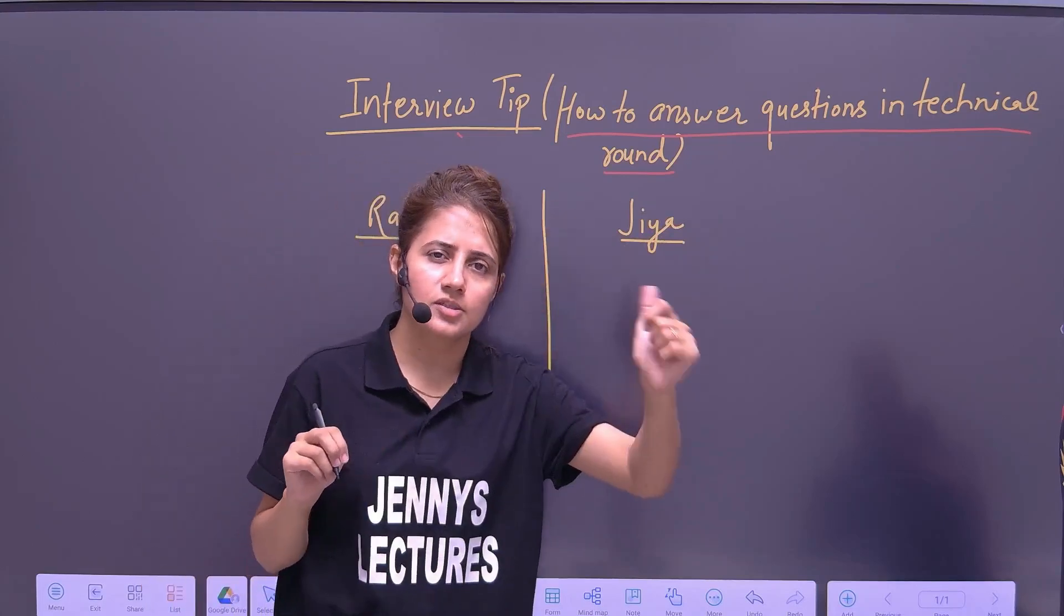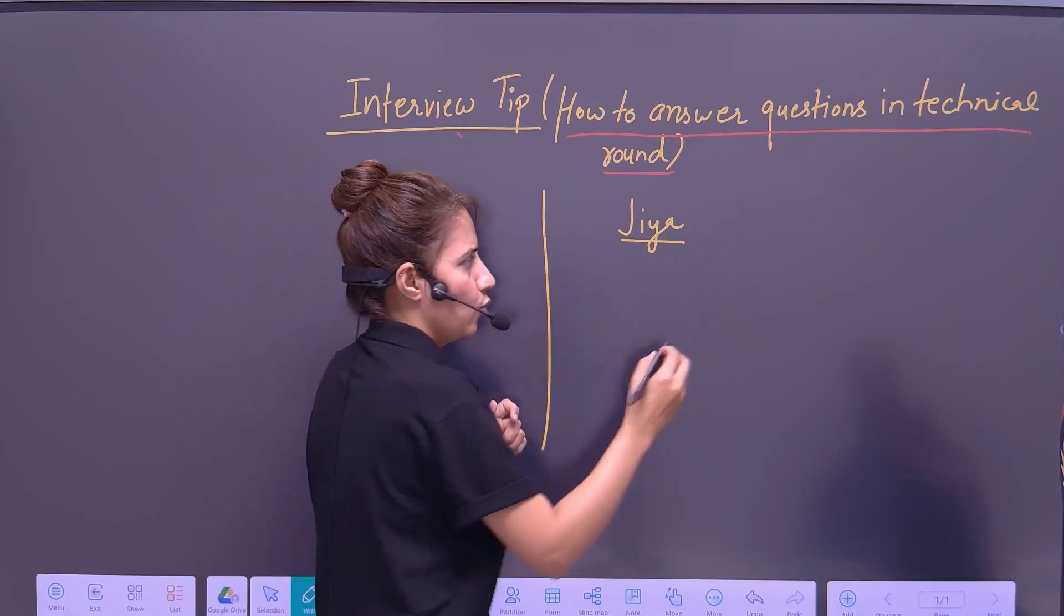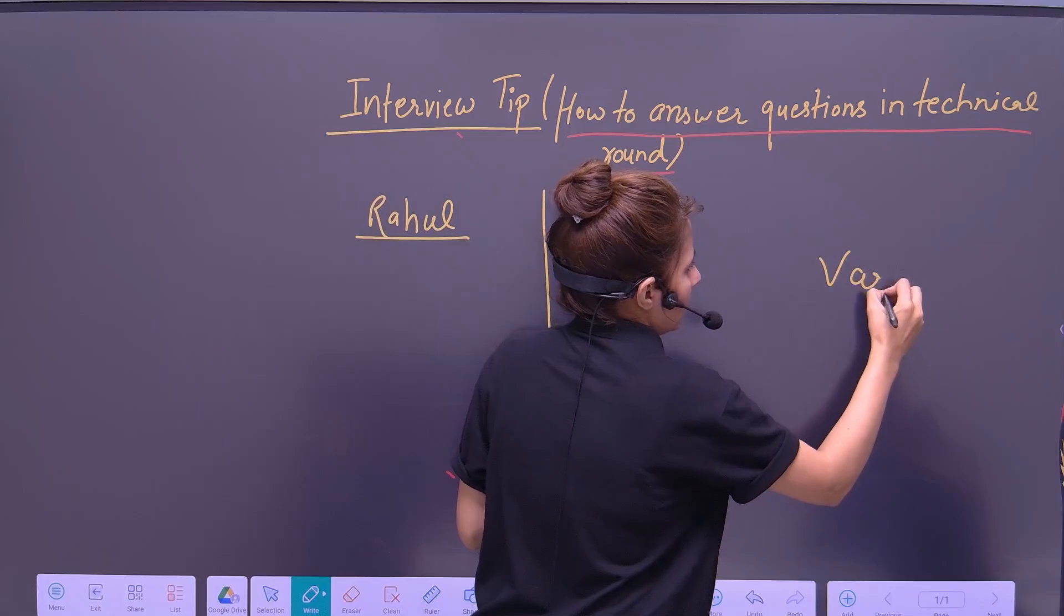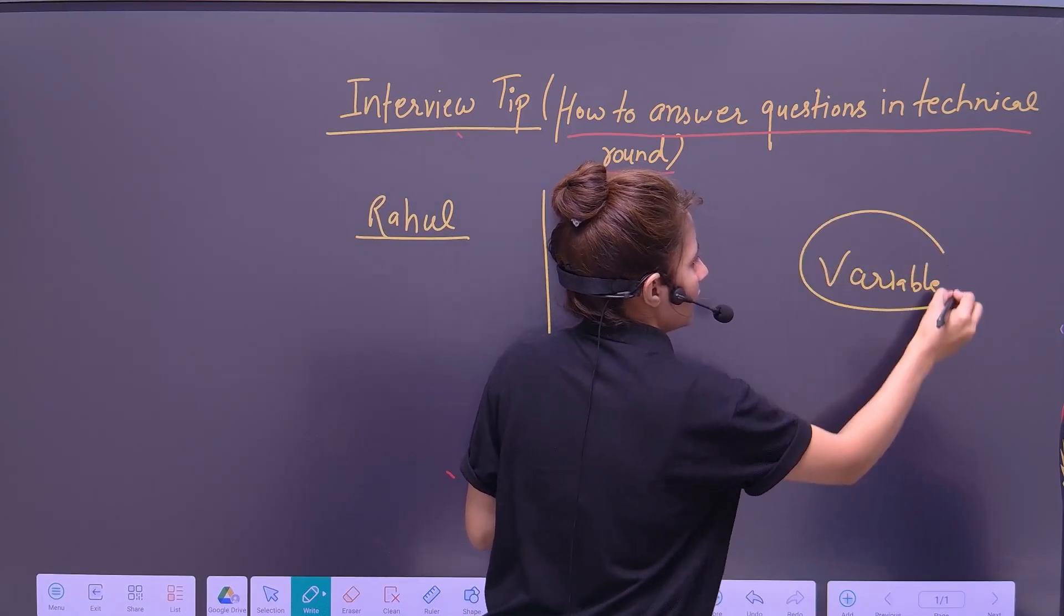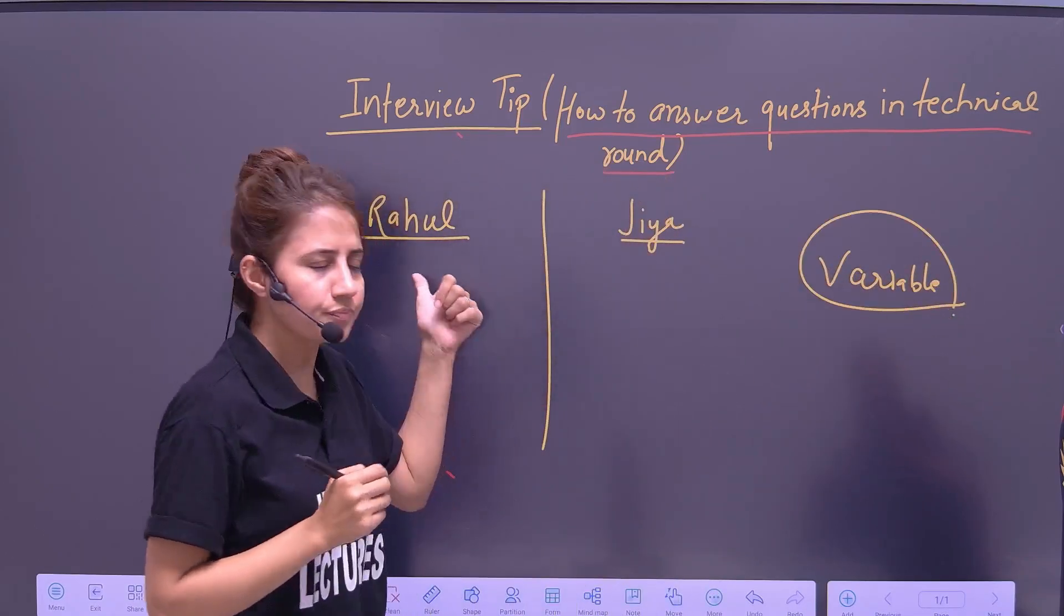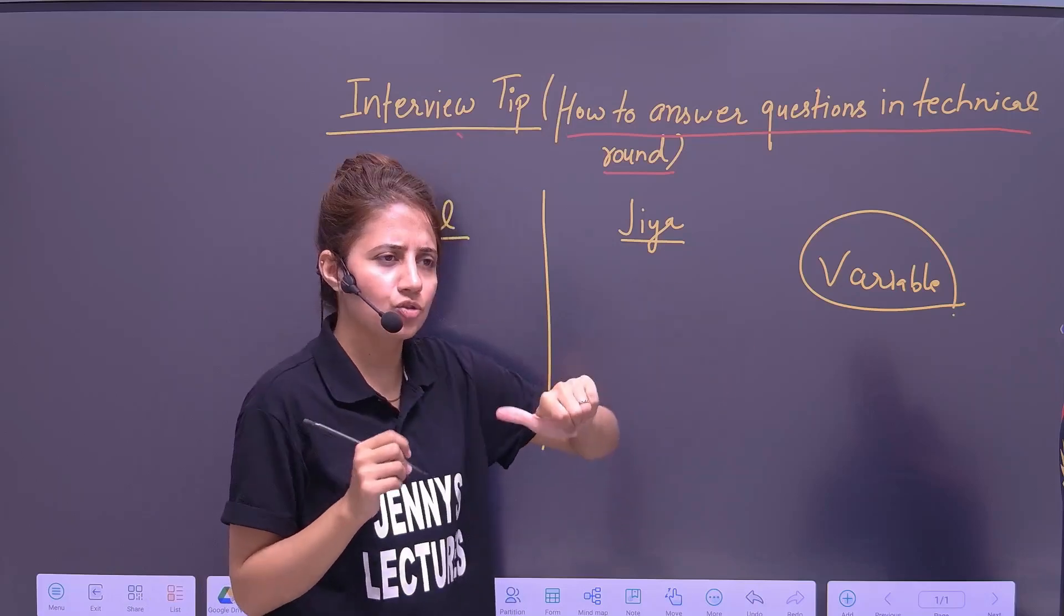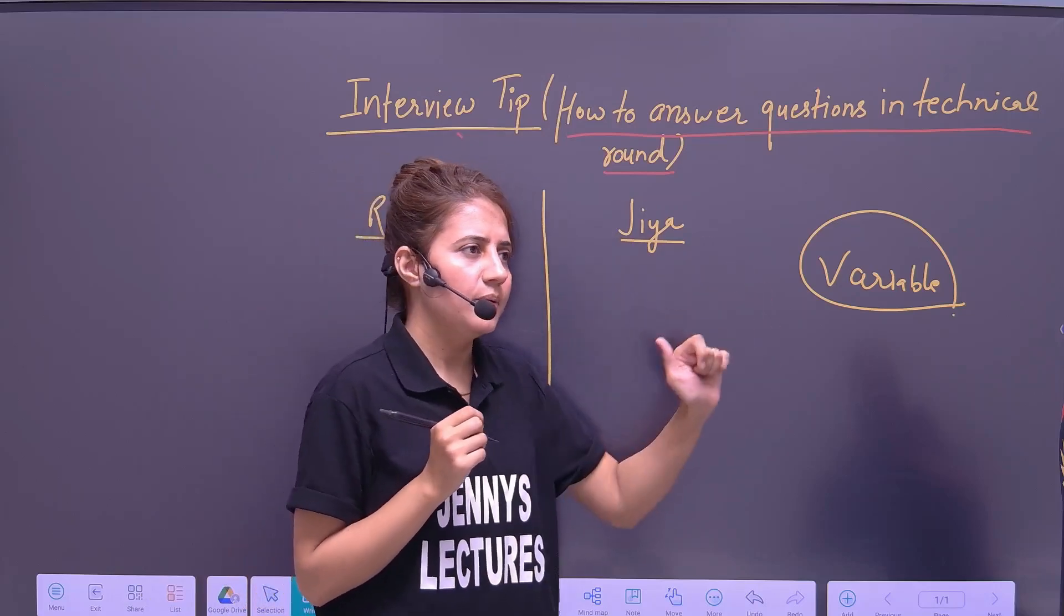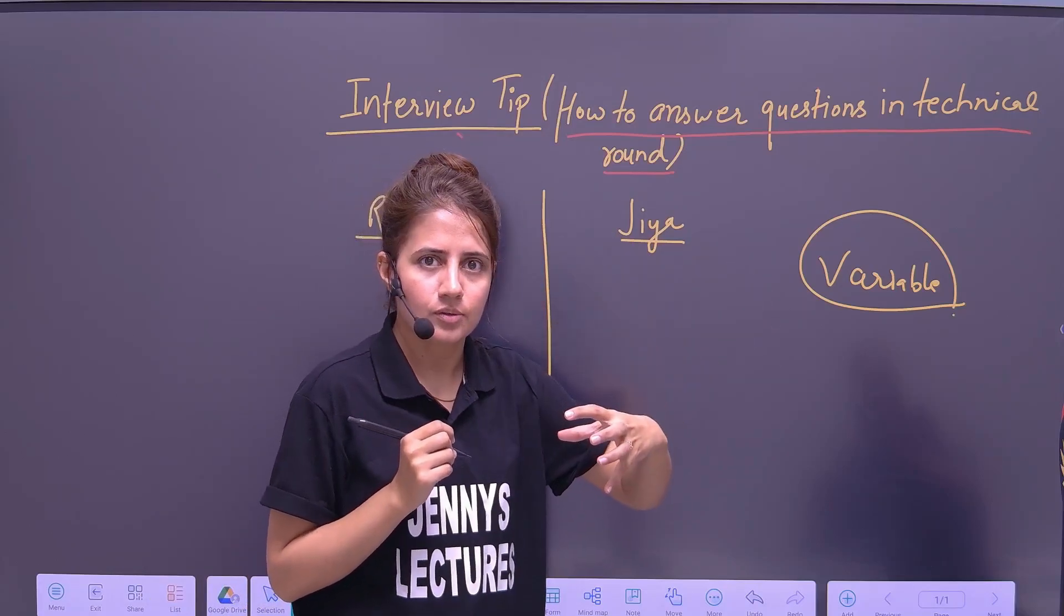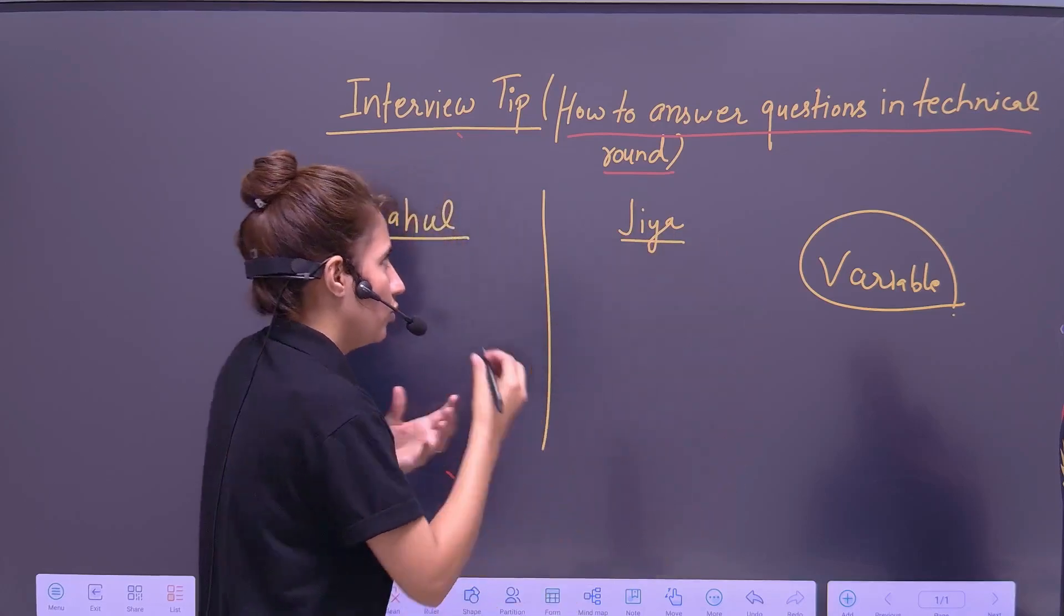And second is Jia. So suppose the interviewer asks simple question. They both are fresher. Like what is a variable? So obviously this is very basic question. But how they answer this question.